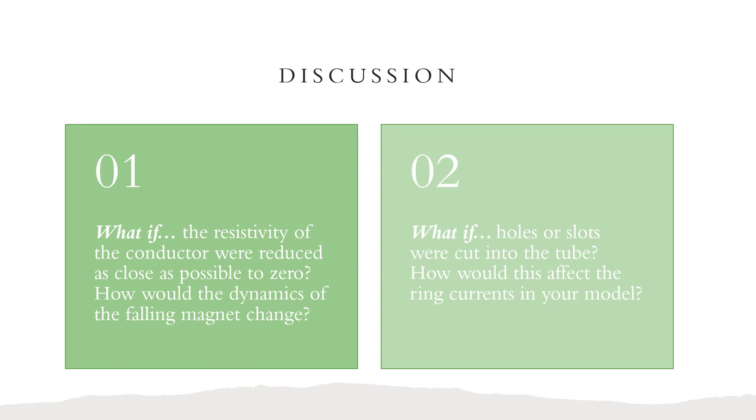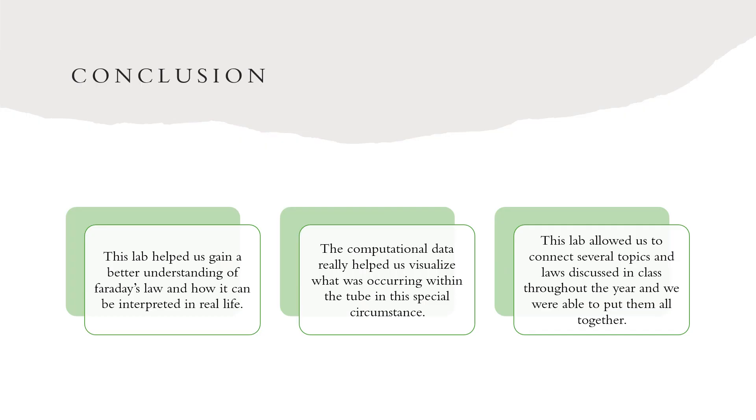What if holes or slots were cut into the tube? How would this affect the ring current in your model? If this situation were true, then the induced current in the loops would probably be less because the holes in the tube would disrupt the flow of current. The magnet would also probably fall through the tube quicker from the induced current being reduced.